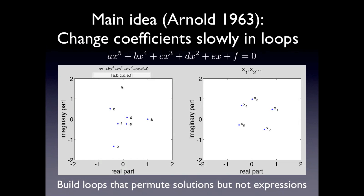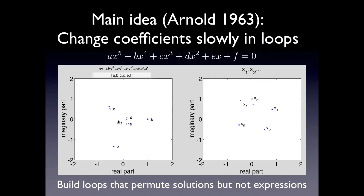The idea of the proof is to move the coefficients of the polynomial equation in a continuous way in a loop, in the sense that the coefficients will return to their original value at the end of the loop. When this happens, the equation returns to its original form, which means the set of solutions returns to the same set. However, as you can see in this real numerical example, if you follow one of the solutions, it doesn't necessarily return to itself. And at first sight, it looks like this is enough to prove the theorem, because the solutions do not return to themselves while the coefficients do, and any expression of the coefficients will also return to itself.